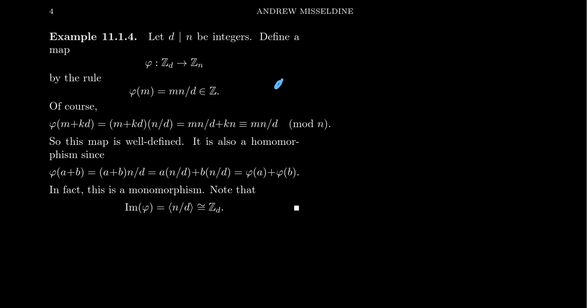Well, since d divides n, that implies that mn divided by d is, of course, well, I should say that n over d is an integer. So therefore, m times n divided by d would be an integer right here. So that makes sense.